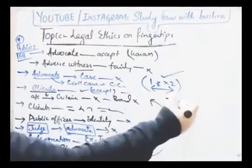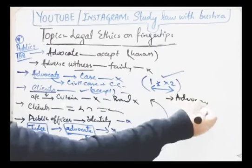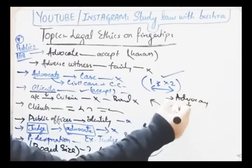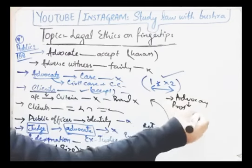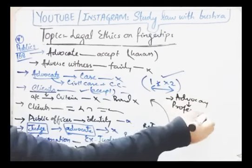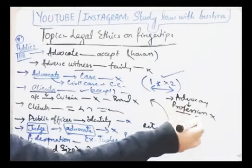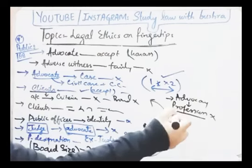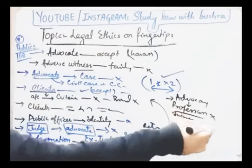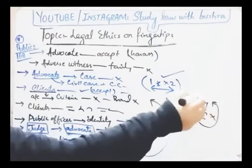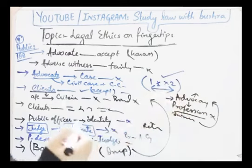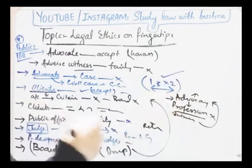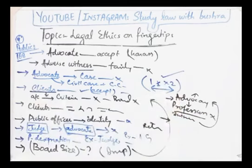Agla rule: 'An advocate shall not join or carry on other professional business or service.' During the period of advocacy aap kisi bhi aur profession ko adopt nahi kar sakte, koi aur apna business run nahi kar sakte. Agar aap koi aur profession adopt karna chahte ho to sabse pehle aapne apne is advocacy ke license ko suspend karana hoga, uske baad aap kisi bhi profession ko adopt kar sakte ho.